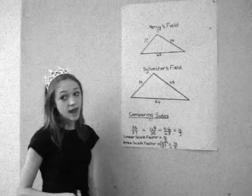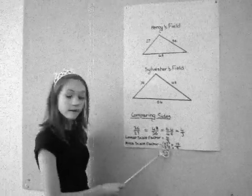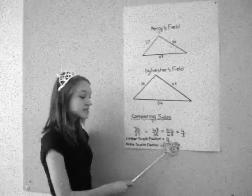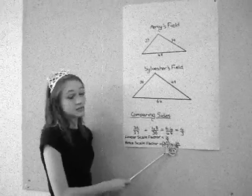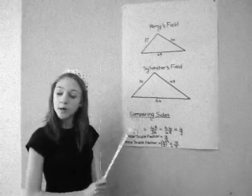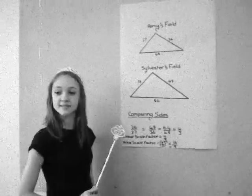But we can't do that for the area scale factor, so you have to square it. So 4 thirds squared is 16/9, which means Sylvester that your field is about 1.8 times bigger than Percy's. See, I told you your field wasn't twice as big as mine. Yeah, but it's still nearly twice as big. It's 1.8, which is more than one and a half times. So now we know that, how do we work out our actual areas?